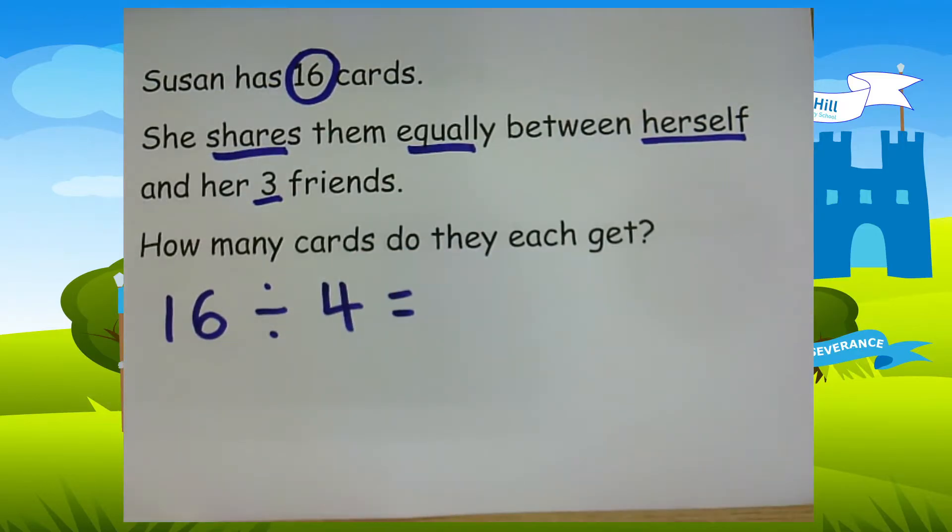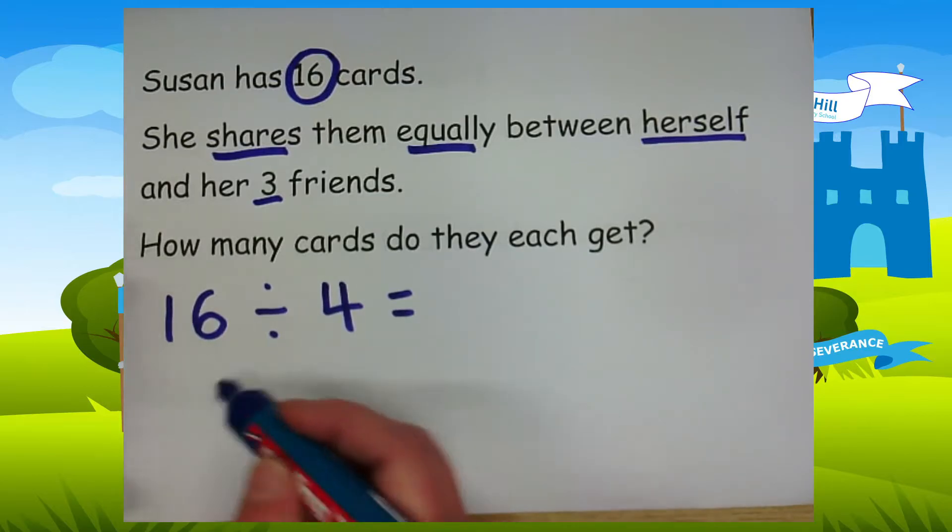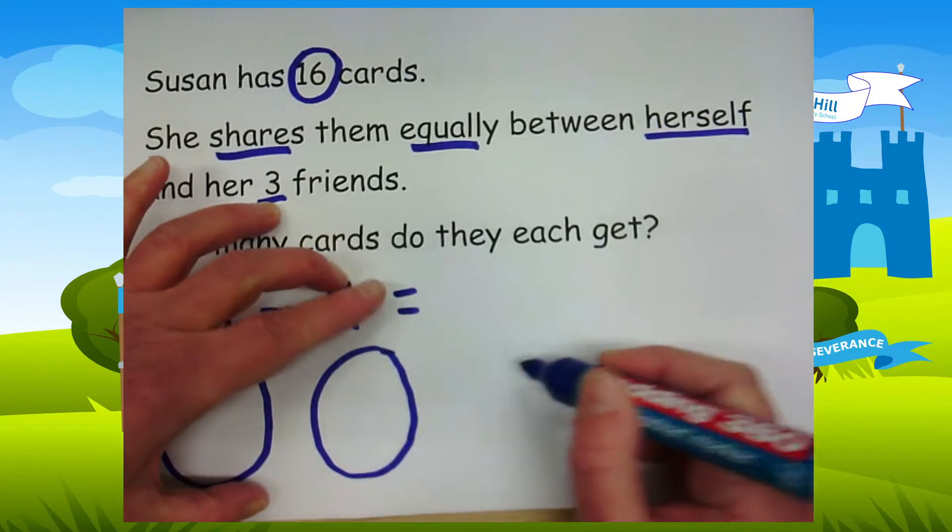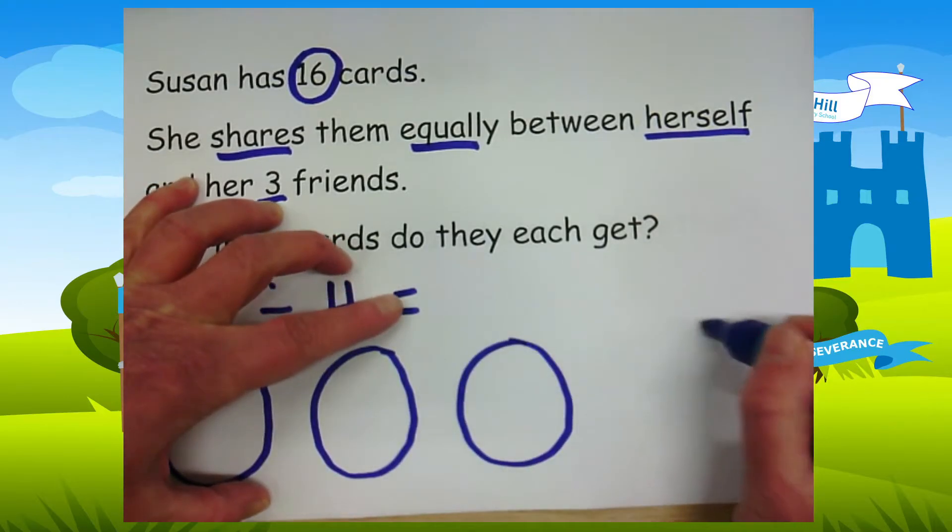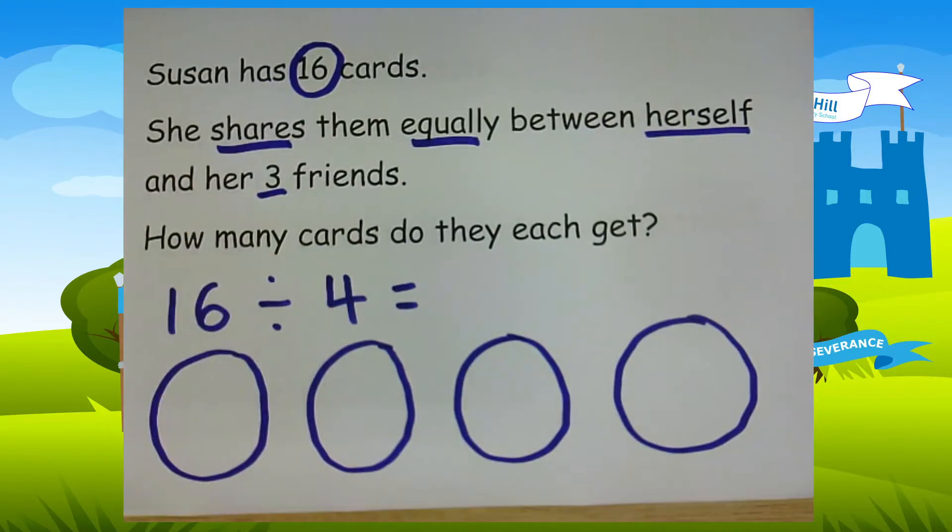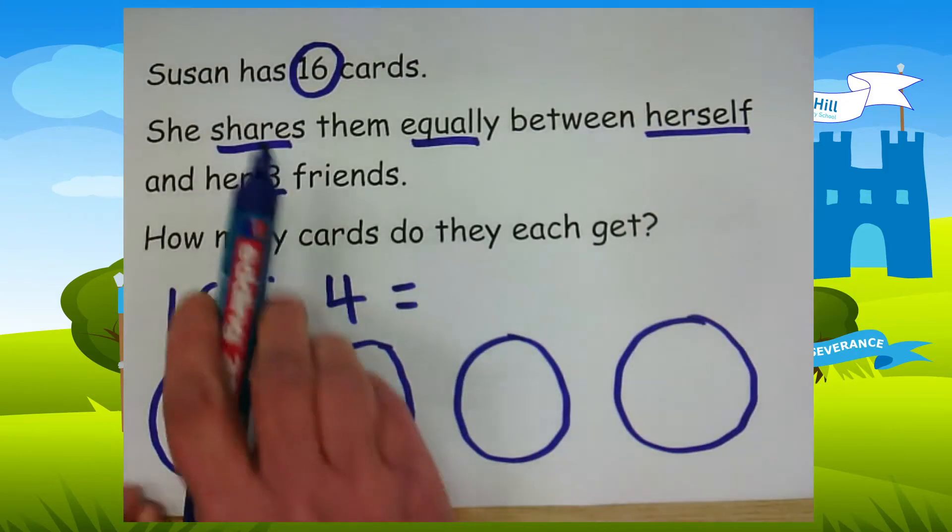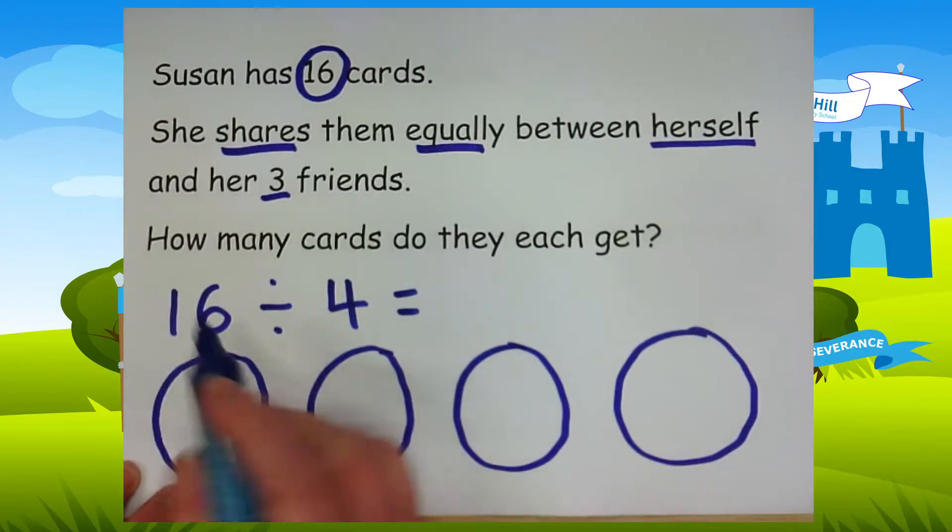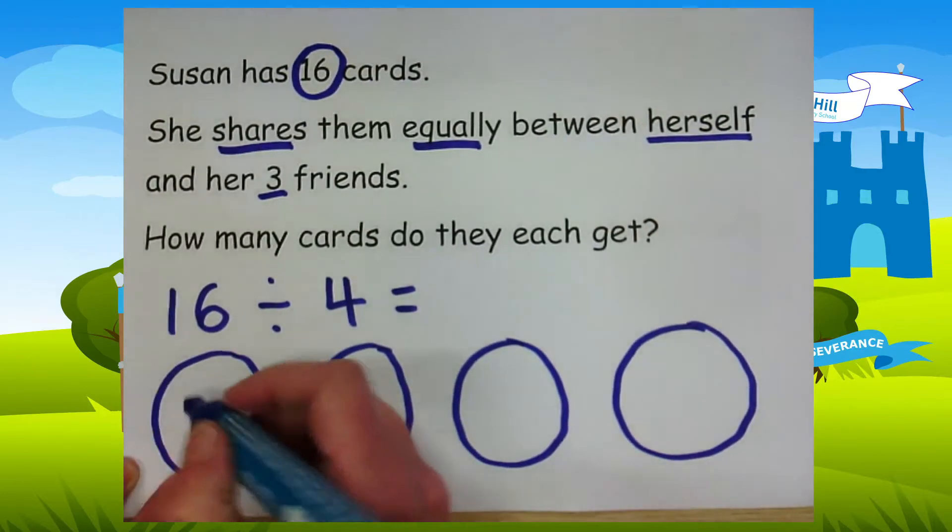Okay, that's our number sentence. So I'm going to use sharing circles for this. I'm going to use four sharing circles for the four friends. There we go. Okay, now I'm going to share equally. So they all get the same amount. So I've got sixteen cards I need to share.